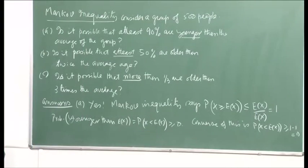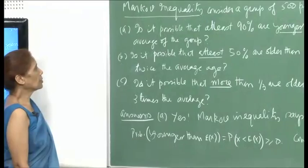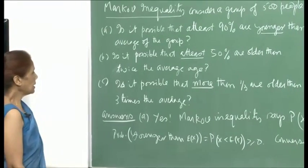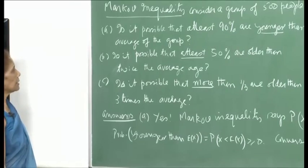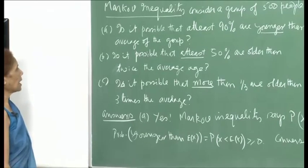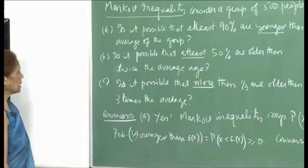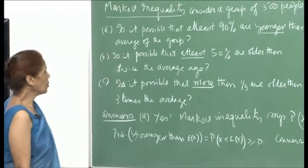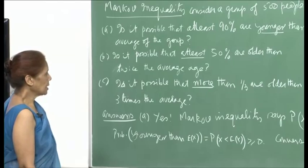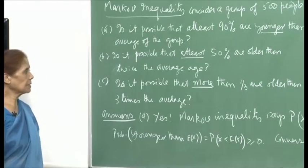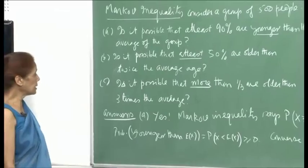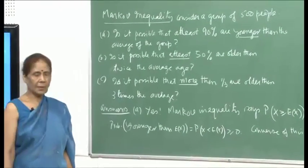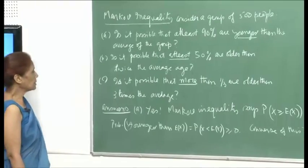Let us see interesting applications of the Markov inequality. Consider a group of 500 people. The questions we are going to ask are: Is it possible that at least 90 percent are younger than the average of the group? Is it possible that at least 50 percent are older than twice the average age? And is it possible that more than one third are older than three times the average? Let us see what kind of answers Markov inequality will give.